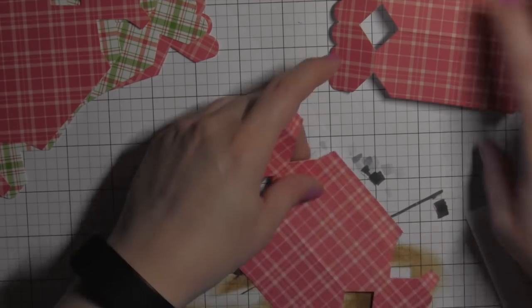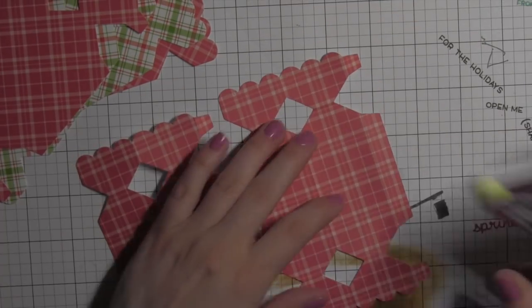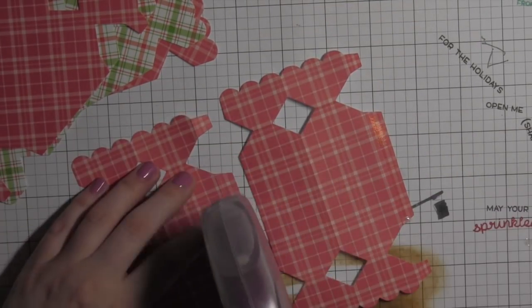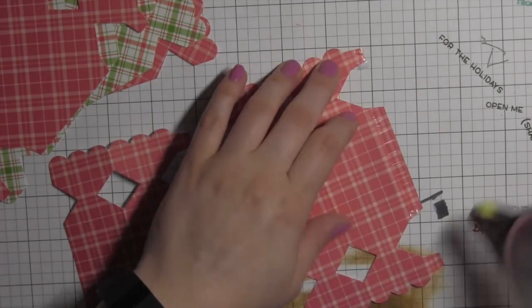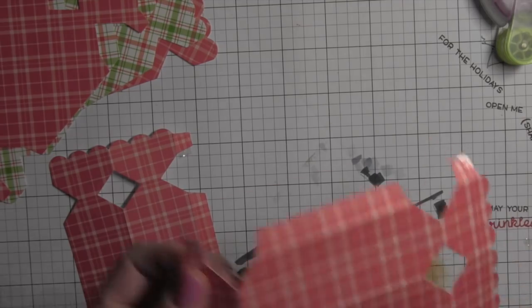Just going over all those creases really well, or the score lines really well, is going to make your box stay together and go together so much easier. Then I take my adhesive and I place it on the tabs on both sides.